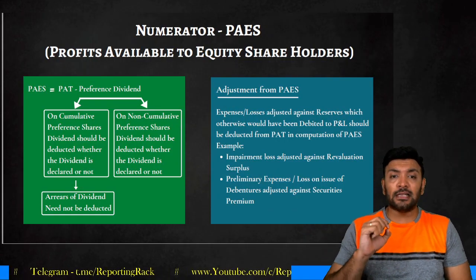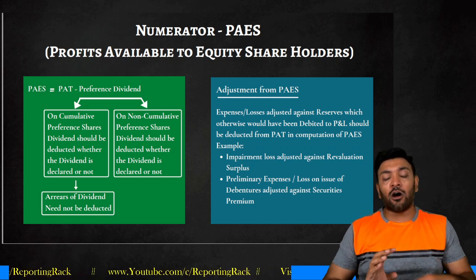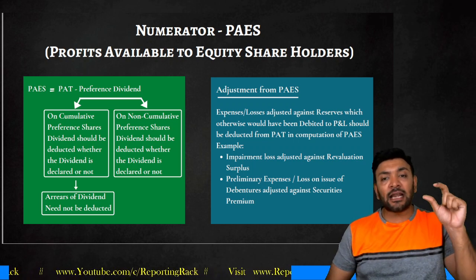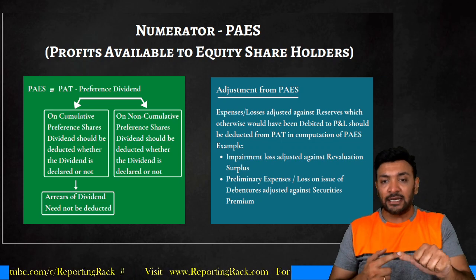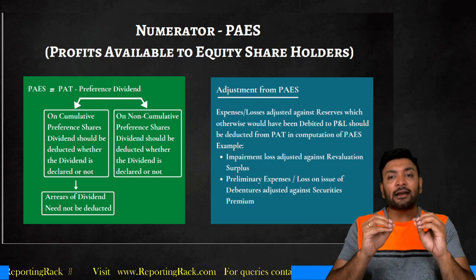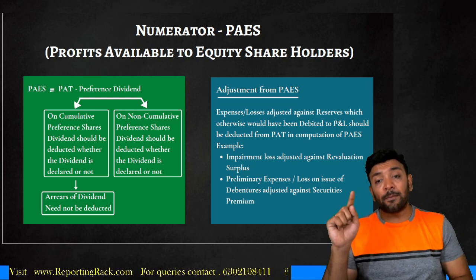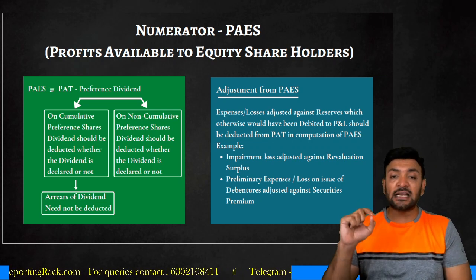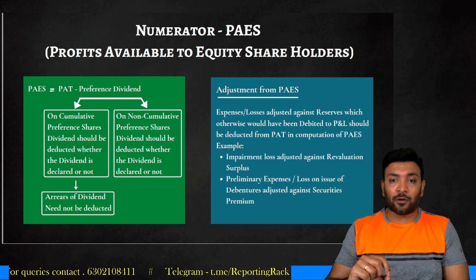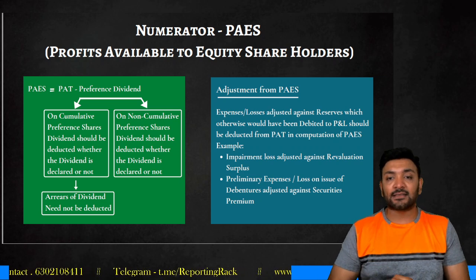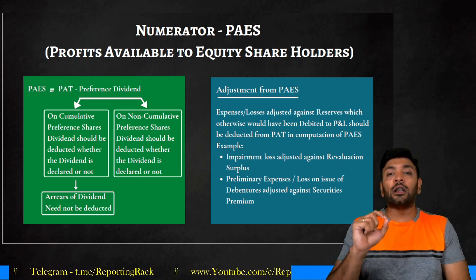To summarize the numerator: PAS equals profit after tax minus preference dividend. Any expense or loss adjusted against a reserve which otherwise would have been debited to P&L should also be deducted. For cumulative preference shares, preference dividend is reduced whether declared or not. For non-cumulative preference shares, preference dividend is reduced only if declared.